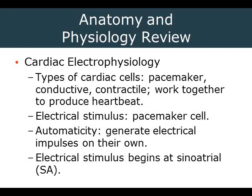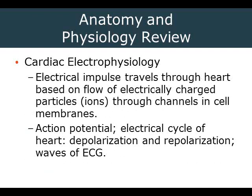There are various types of cardiac cells — pacemaker cells, conductive cells, and contractile cells — that all work together to produce a heartbeat. The electrical stimulus comes from pacemaker cells: the SA node, AV node, and Purkinje fibers. Automaticity is the term describing the heart's ability to create its own electrical impulse — unlike all other muscles, which require stimulus from the nervous system.